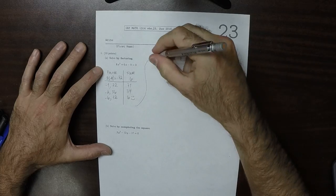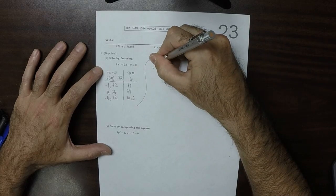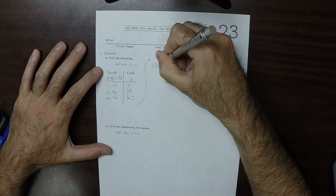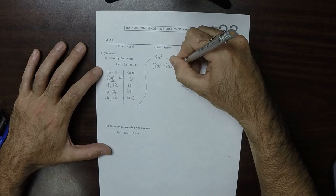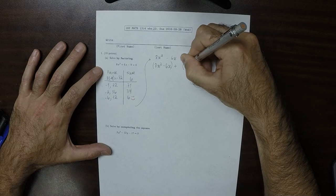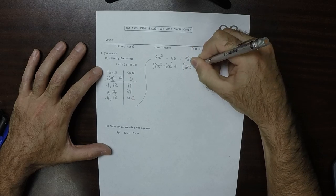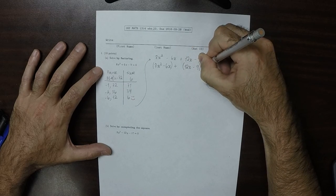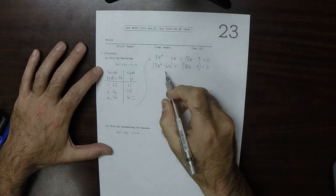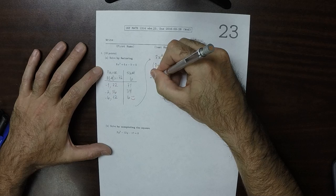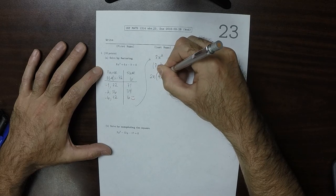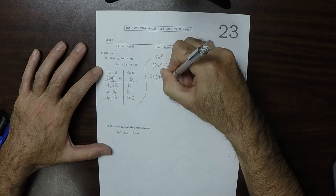We'll group like this: 8x squared minus 6x, this group, and then plus 12x minus 9 equals 0. Now out of this group, we can factor out 2x. So doing that, that would be 4x minus 3.